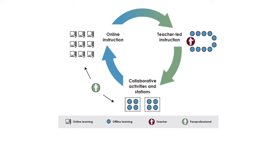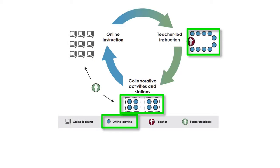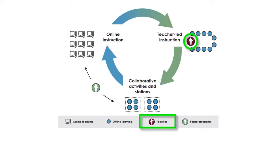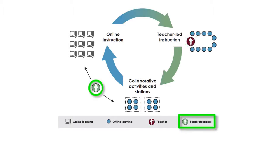Moreover, let's go ahead and define the following labels: online learning, offline learning — these are the blue colored circles — and of course the teacher. Finally, keep in mind that this is the symbol for paraprofessionals such as teacher aides.